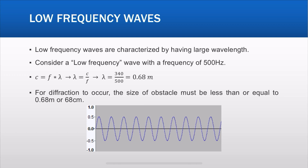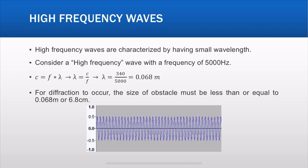So for diffraction to occur, the size of the obstacle must be less than or equal to 0.68 meter, or 68 centimeter. Now, high frequency waves are characterized by having a small wavelength because they have a higher frequency. As you can see in the picture, the wave looks pretty compressed. Considering a high frequency wave with a frequency of 5000 Hertz — 10 times larger — if you plug it into the equation you get a smaller wavelength of 0.068 meter. So for diffraction to occur, the obstacle size must be less than 0.068 meter.